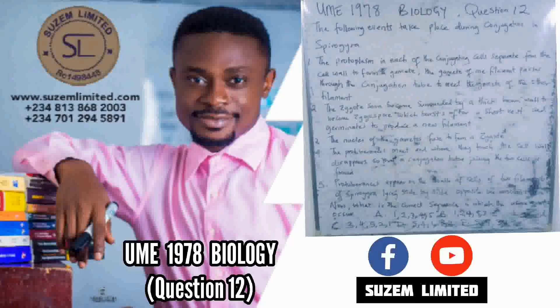Number two, an outgrowth known as protuberance appears. Number three, these protuberances from each of them join together to form what we call conjugation tube.